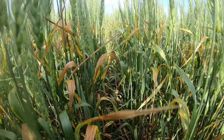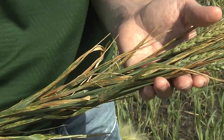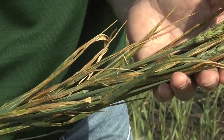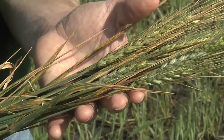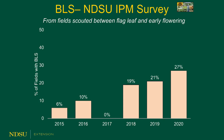Bacterial leaf streak is soon becoming our most important foliar disease of wheat in North Dakota and Minnesota. The ability of this disease to cause extensive leaf damage on the flag leaf has led to some drastic yield losses, especially on some susceptible varieties. When we look at the prevalence of this disease across the state, we have been scouting for bacterial leaf streak for over 15 years, and data from the last six years from the NDSU IPM survey have shown that we have been finding more bacterial leaf streak when scouting fields at flag leaf to early flowering in the past three years. This suggests that this disease is starting to rise in occurrence across the state.